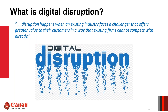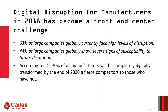So what is digital disruption? Disruption happens when an existing industry faces a challenger that offers greater value to their customers in a way that existing firms cannot compete with directly. The digital revolution is breaching the walls of manufacturing as it continues to disrupt media, finance, consumer products, healthcare, and other sectors. The explosion in the use of big data, along with advances in artificial intelligence, automation, robotics, and human-machine interaction, are unleashing innovations that will change the nature of manufacturing itself. Industry and academic leaders agree that digital manufacturing technologies will transform every link in the manufacturing value chain — from research and development and supply chain to factory operations, marketing, sales, and service.